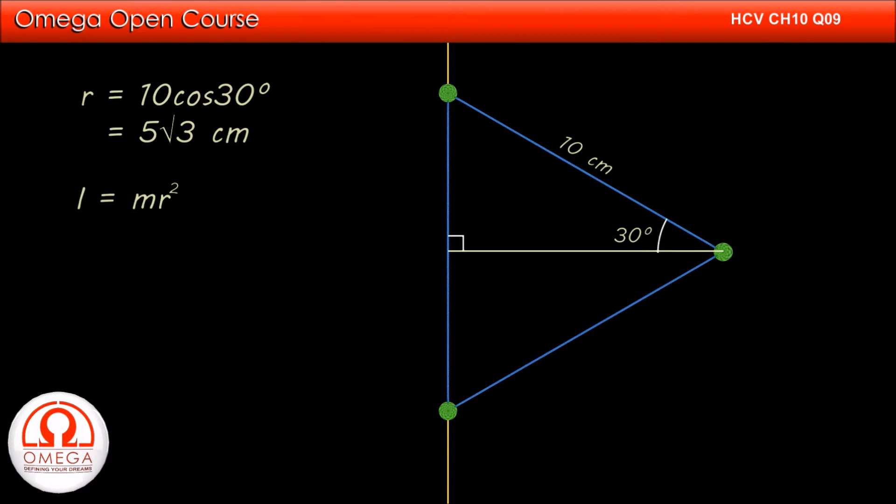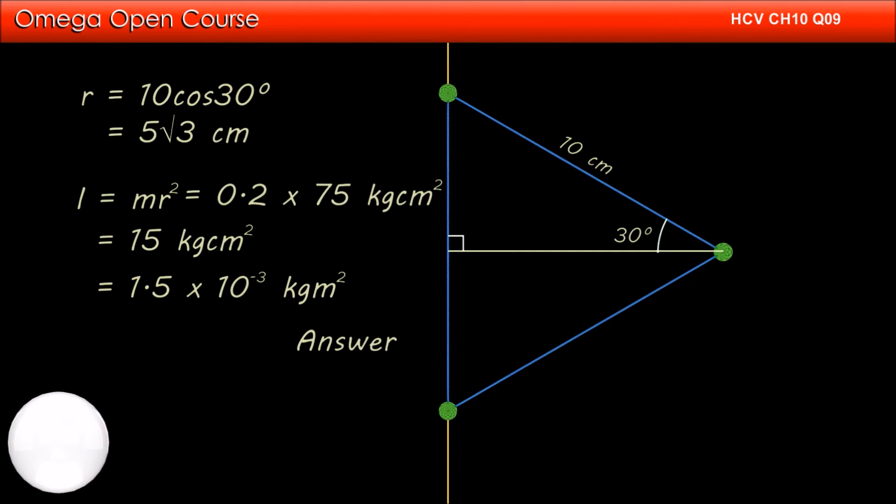Its moment of inertia about the axis is mass into distance square, or 0.2 into 75 kg cm square. Simplifying, we get 15 kg cm square. Converting to SI unit, we get moment of inertia equal to 1.5 into 10 to the power minus 3 kg meter square. This is the answer to part A of the question.